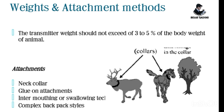Regarding attachment methods, we can attach the transmitter to animals in a number of ways depending on the transmitter nature. The first one is neck collar attachment — we put the transmitter around the neck of the animal. Second is glue-on attachment, where we attach the transmitter using glue. We can also use intermount and sewing techniques, where the transmitter is swallowed by the animal and enters the body. Another method is the backpack-style, where we make a bag and attach it to the animal.